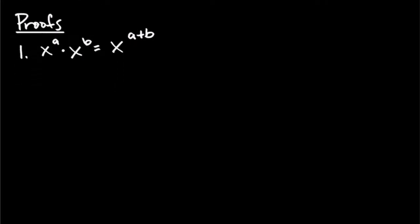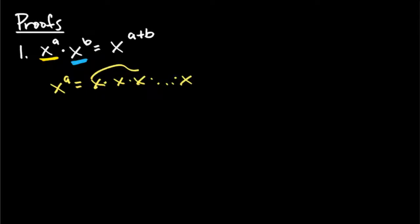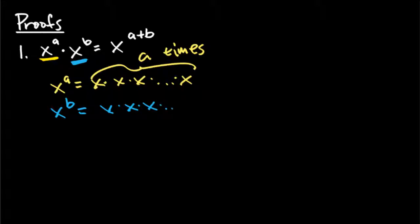Let's look at the first two properties and analyze them. I'm going to color-code one yellow and one blue so we can work with them individually, then together. x to the a power means you have x times x times x — it multiplies to itself a times, whatever that exponent is. x to the b power is the exact same thing, except it happens b times.